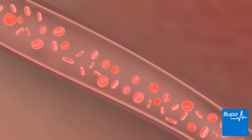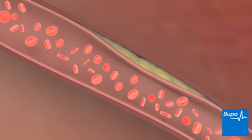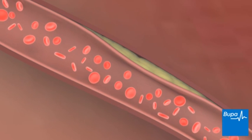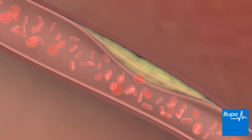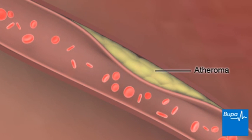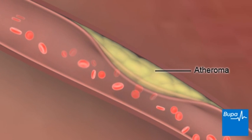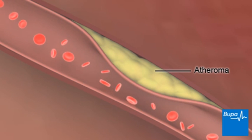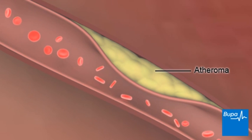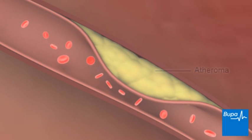Over years, fatty deposits in the blood can build up and form a plaque or atheroma on the artery wall. This can prevent the heart muscle from getting the blood and oxygen supply that it needs.